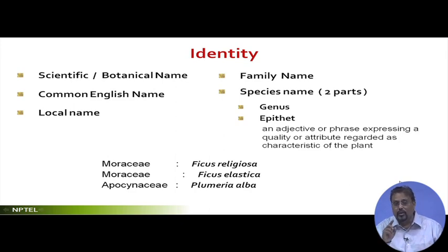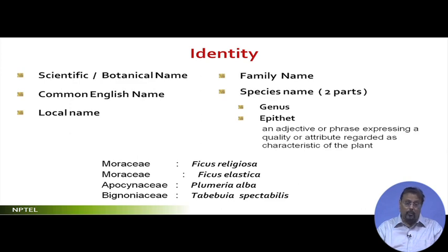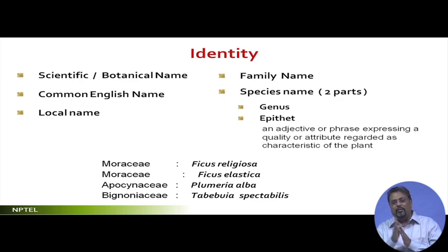Whenever you are trying to understand plants, do not simply blindly take these names — try to know the identity with respect to its characteristics as well. There is another set of trees: Bignoniaceae is the family name of Tabebuia spectabilis. Tabebuia is the genus; spectabilis means spectacular, very attractive, showy. Looking at the Tabebuia spectabilis tree, the whole tree is highly contorted, very lanky, thin kind of tree; foliage is not very attractive but the flowers are highly attractive — yellow color.